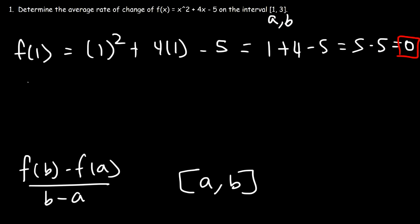Now what about f(3)? That's going to be 3² + 4(3) - 5. 3 squared, 3 times 3 is 9. 4 times 3 is 12. And 12 minus 5 is 7. So we have 9 + 7, which is equal to 16. So that's f(3).